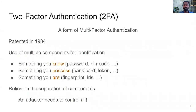Two-factor authentication is a form of multi-factor authentication, specified a long time ago. It allows users to use multiple components for identification. A component could be something you know, like a username or password; something you possess, like a bank card; or something you are, like a fingerprint. The core idea is that if a user is using separate and multiple components to authenticate to a system, it will be harder for an attacker to hijack that account, because the attacker needs to control all those components.